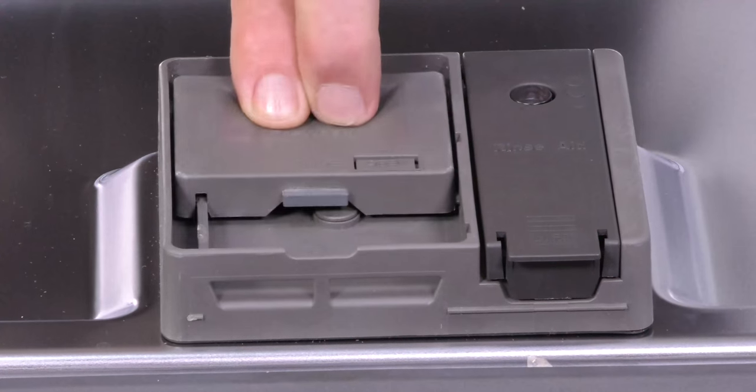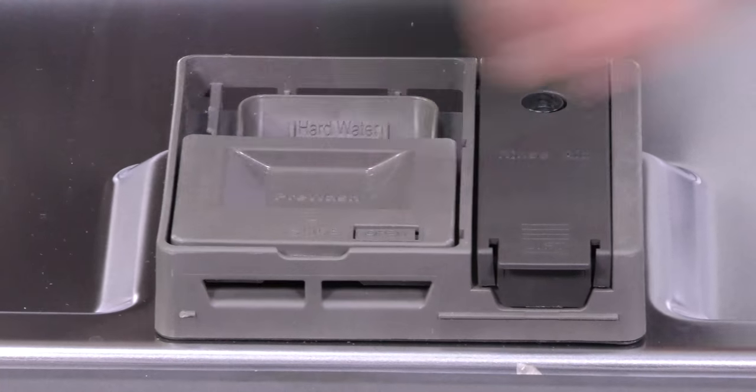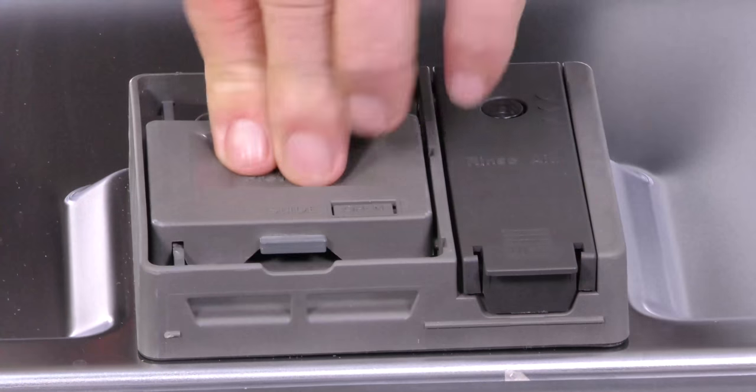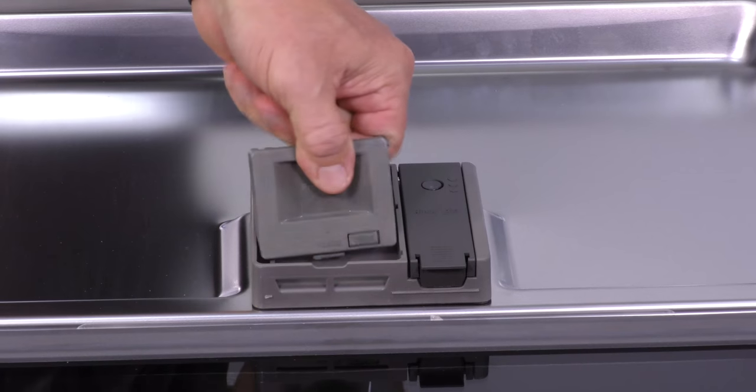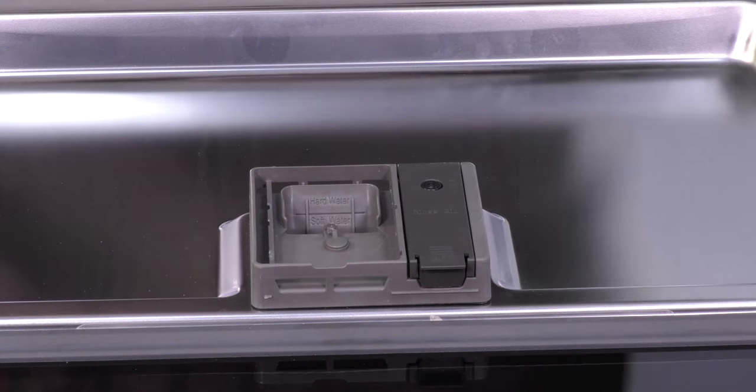All right, on the detergent lid assembly, to remove it just lift up and it snaps right off.